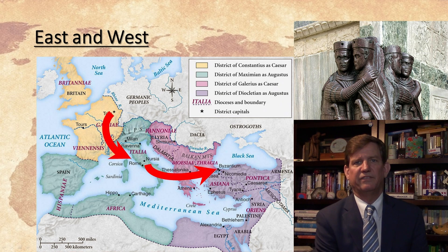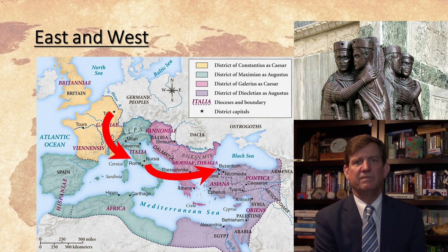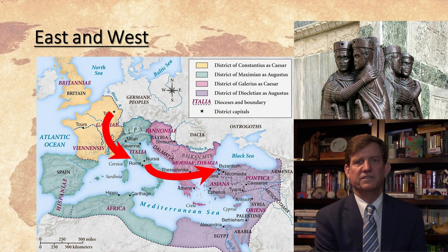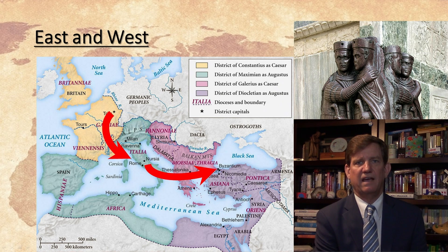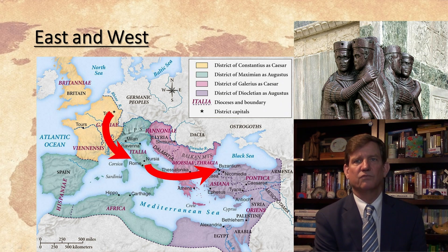Constantine then moved his capital from Rome to Byzantium and renamed it Constantinople. The civilization that continued to live in Constantinople was the Roman Empire — they were the legitimate heirs to Rome. And so, even though Rome itself decayed over the next thousand years, Byzantium continued to live as Rome.